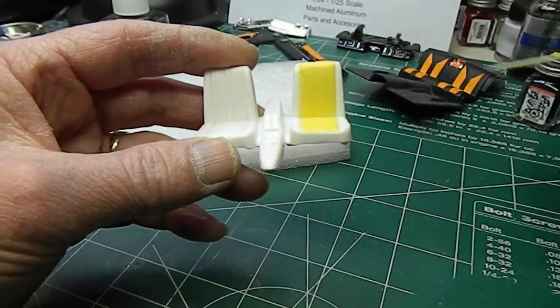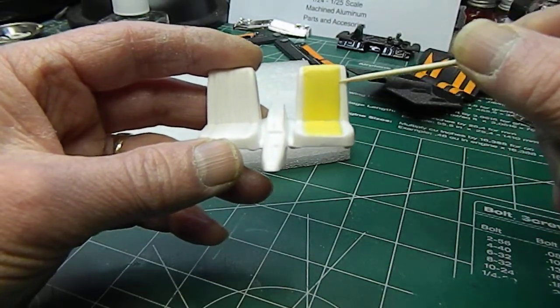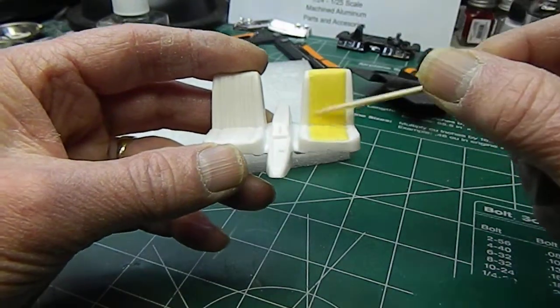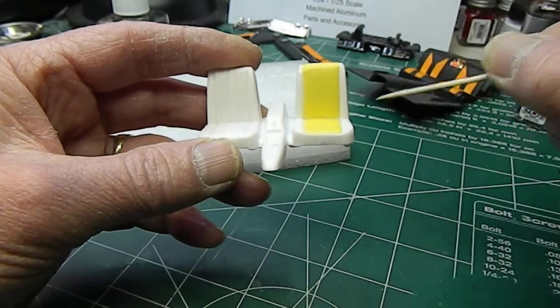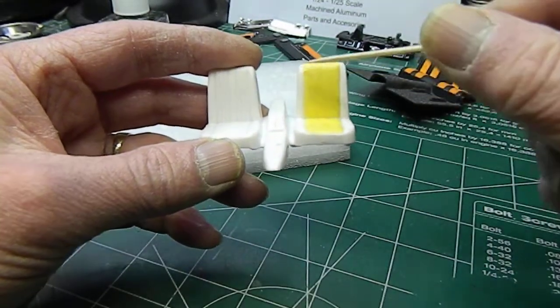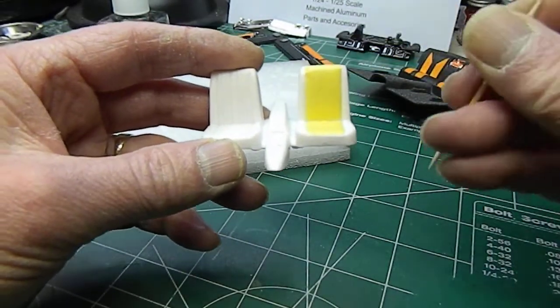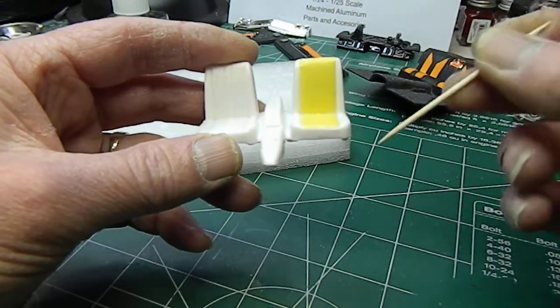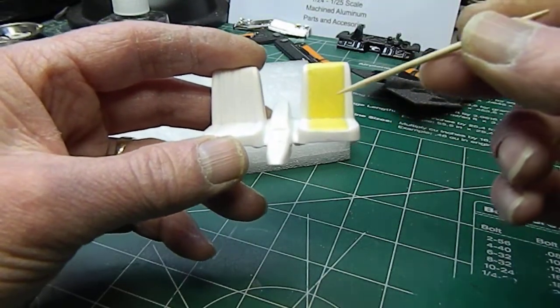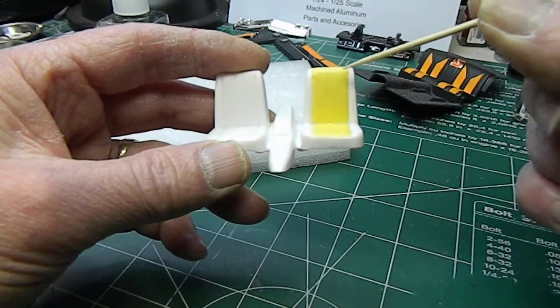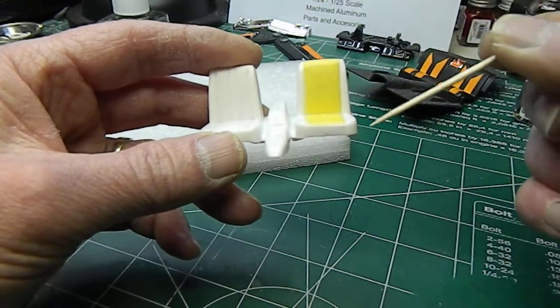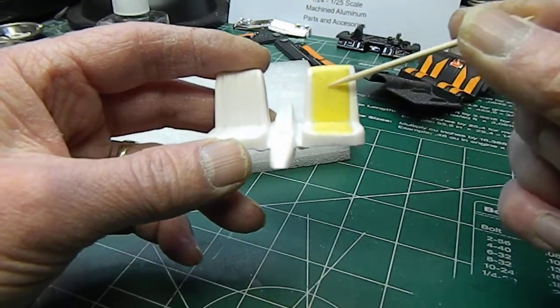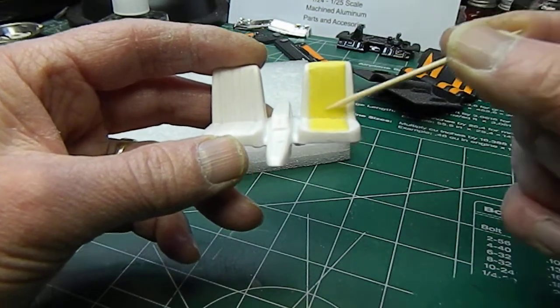With the Foose seats, I sprayed them orange first, then masked off the orange portion I wanted to save, and then sprayed it with flat black. Just before it's dry, pull the tape off really carefully. So you do this in two pieces—one down the back, one down the bottom.